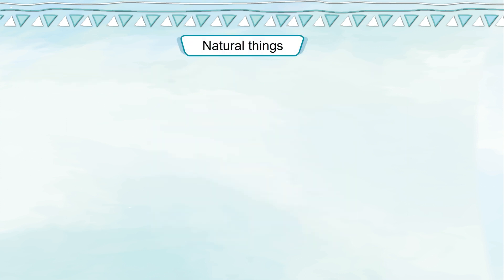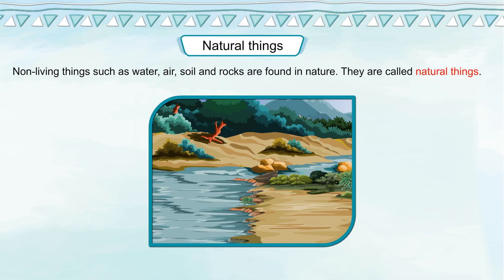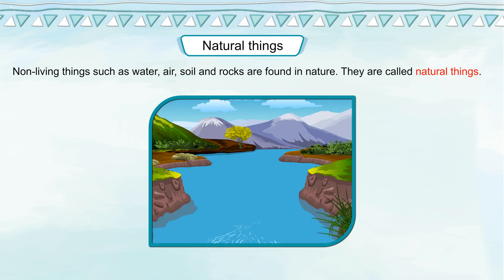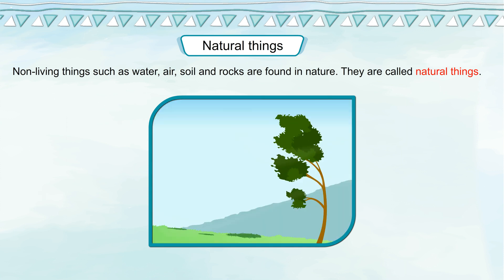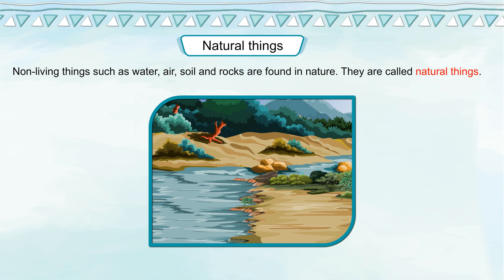Natural Things. Non-living things such as water, air, soil and rocks are found in nature. They are called natural things. We cannot make these things.